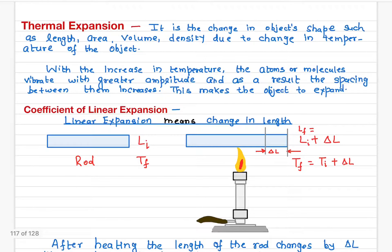In this video I'll talk about thermal expansion and the coefficient of linear expansion. The term 'thermal' means heat, and 'expansion' is the change in shape, size, length, area, volume, or even density due to a change in temperature. If an object's shape changes due to a change in temperature, we call it thermal expansion.